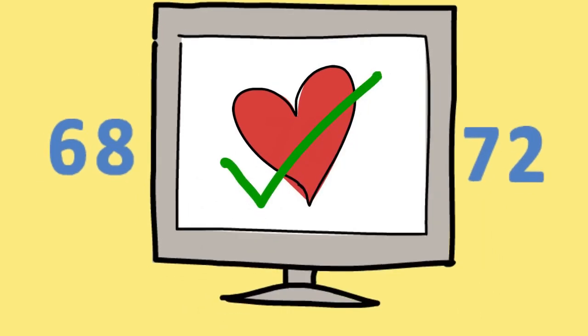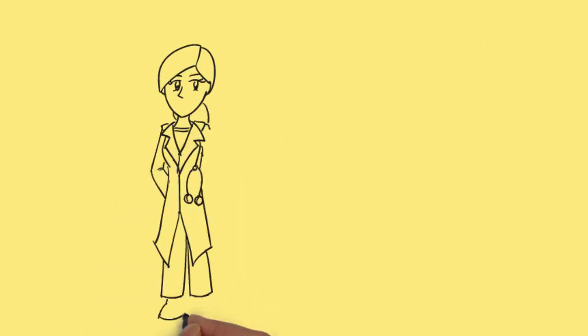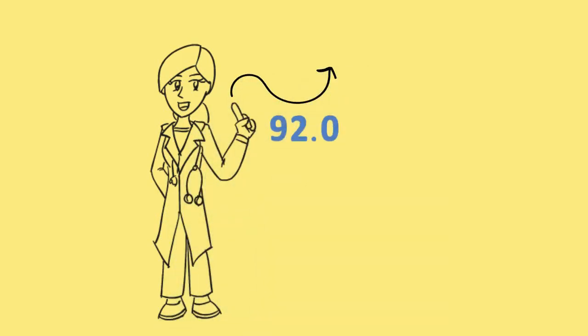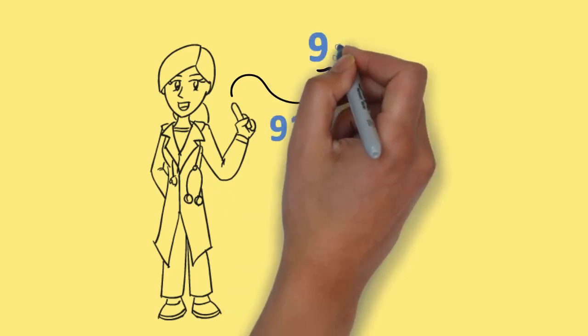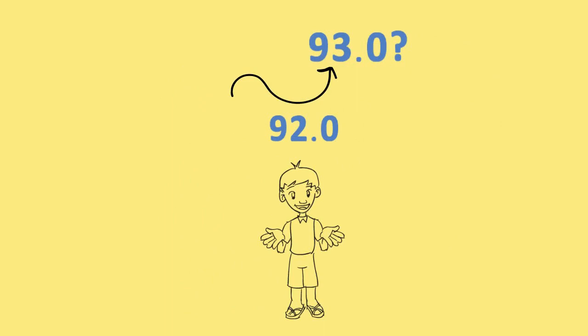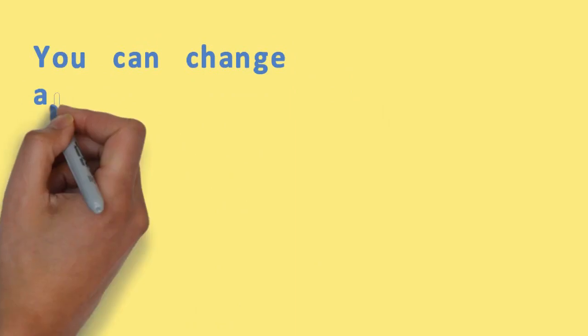If you put a sensor on your fingertip and it measured your temperature as 92.0 degrees, could you learn to increase the temperature to 93.0 degrees? Even a four-year-old child can learn to do that. It's very simple to do. You can change anything that can be measured.